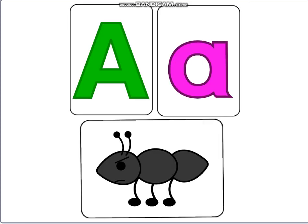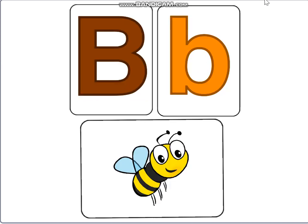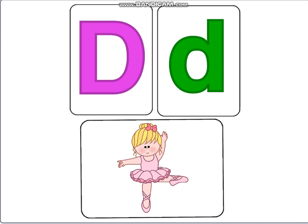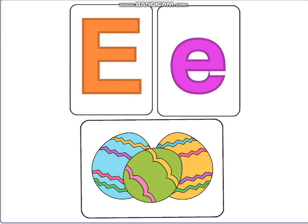A for Angry Ant. B for Busy Bee. C or Cuff for Curly Crisp. D or Del for Dancing Doll. E for Easter Egg.